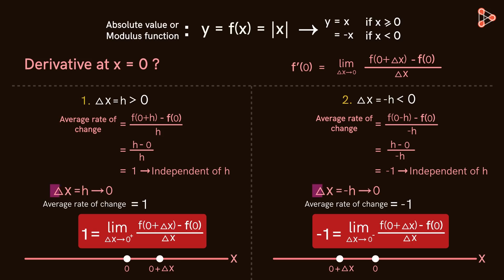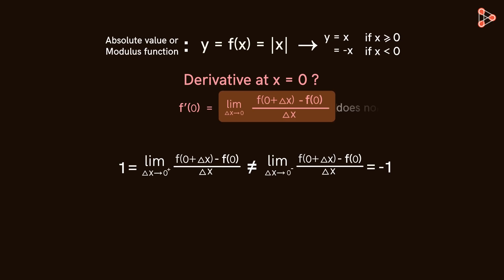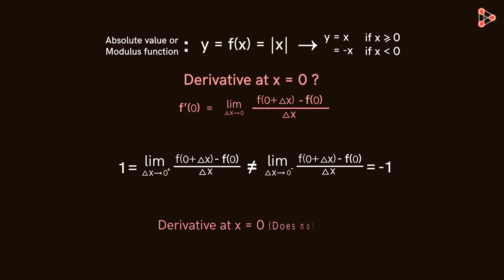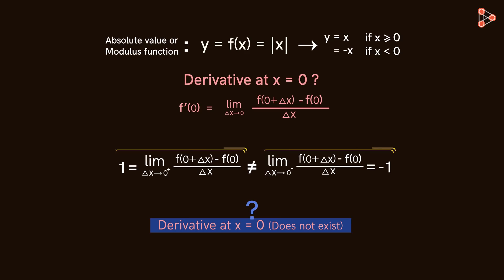But notice: as delta X tends to zero, the average rate of change of these two cases does not approach the same number. This means that the limit of this ratio as delta X tends to zero does not exist. So the derivative of this function at X equal to zero does not exist. Why do we get two different values for the average rate as delta X tends to zero? To understand this, let's look at the graph of the function.